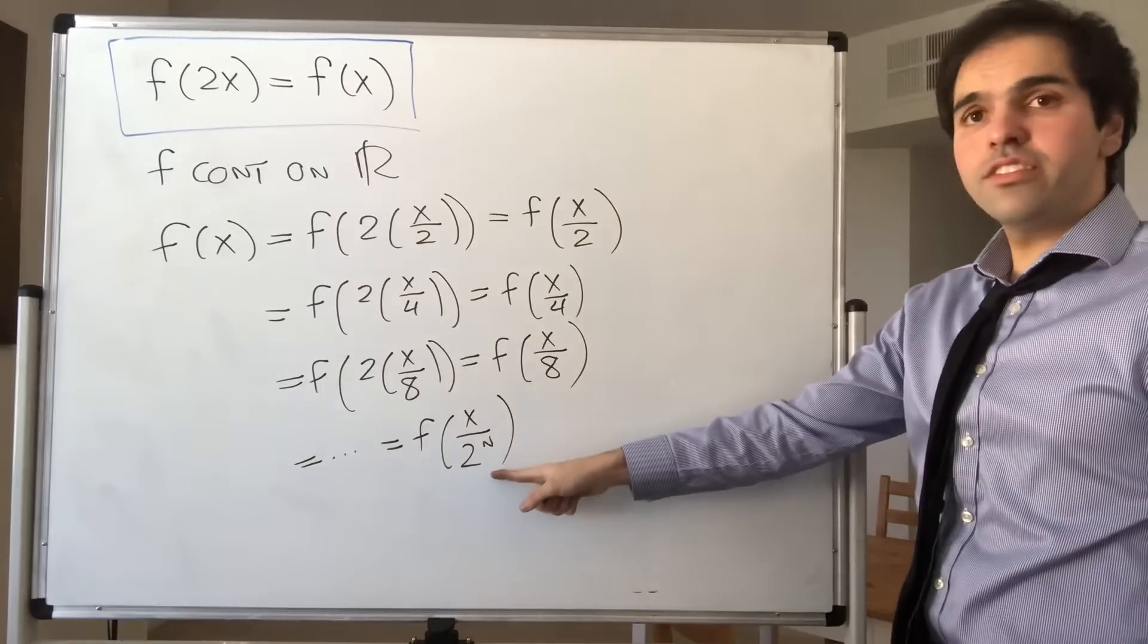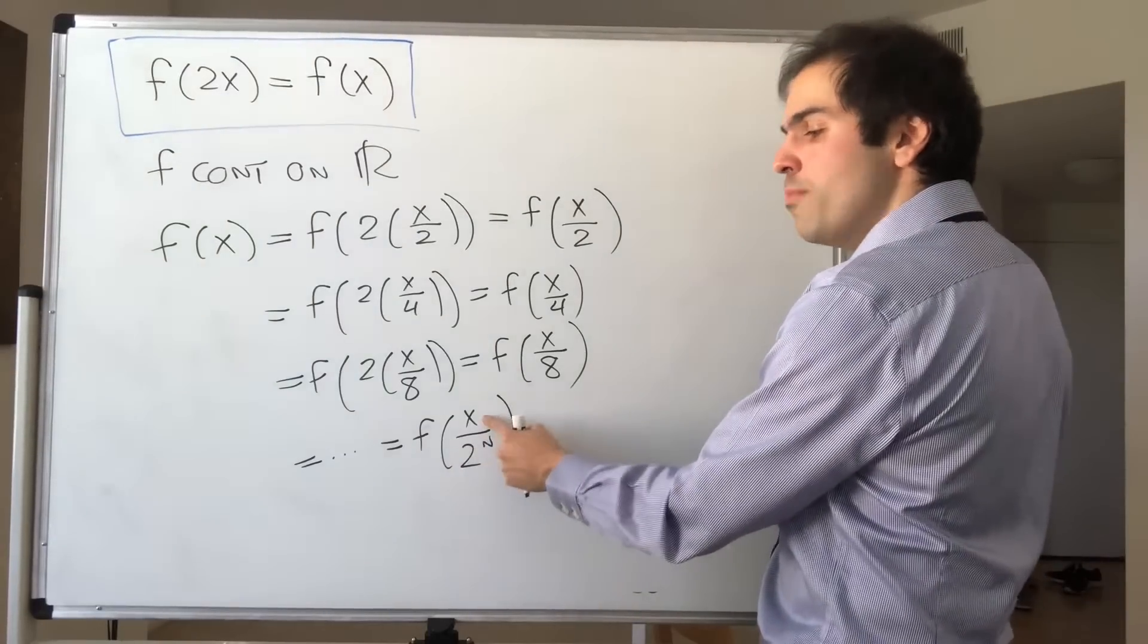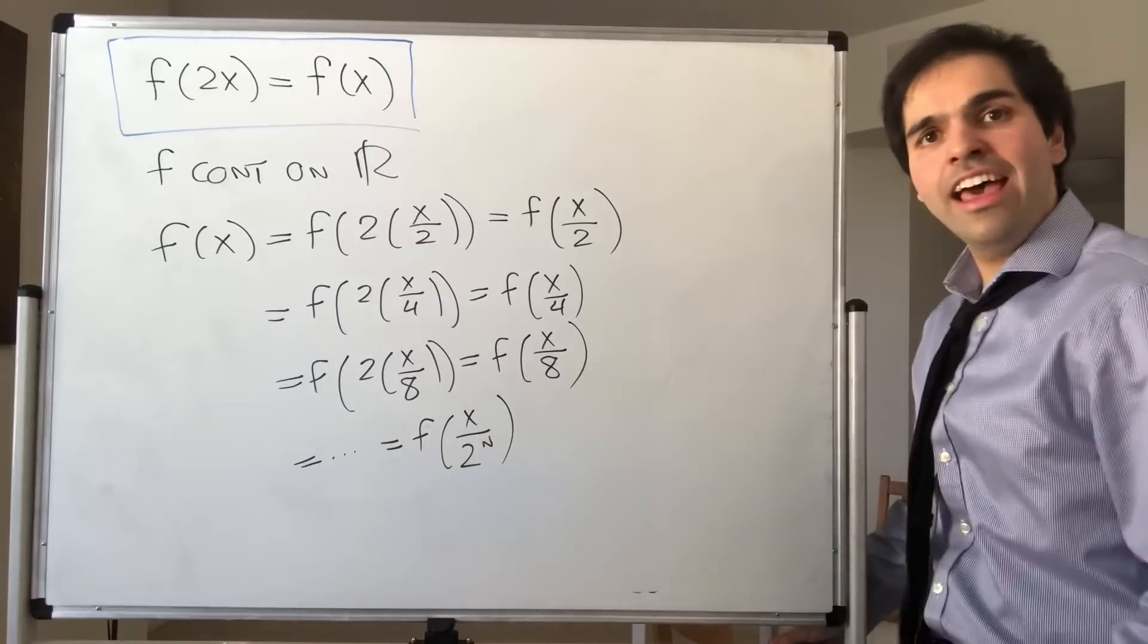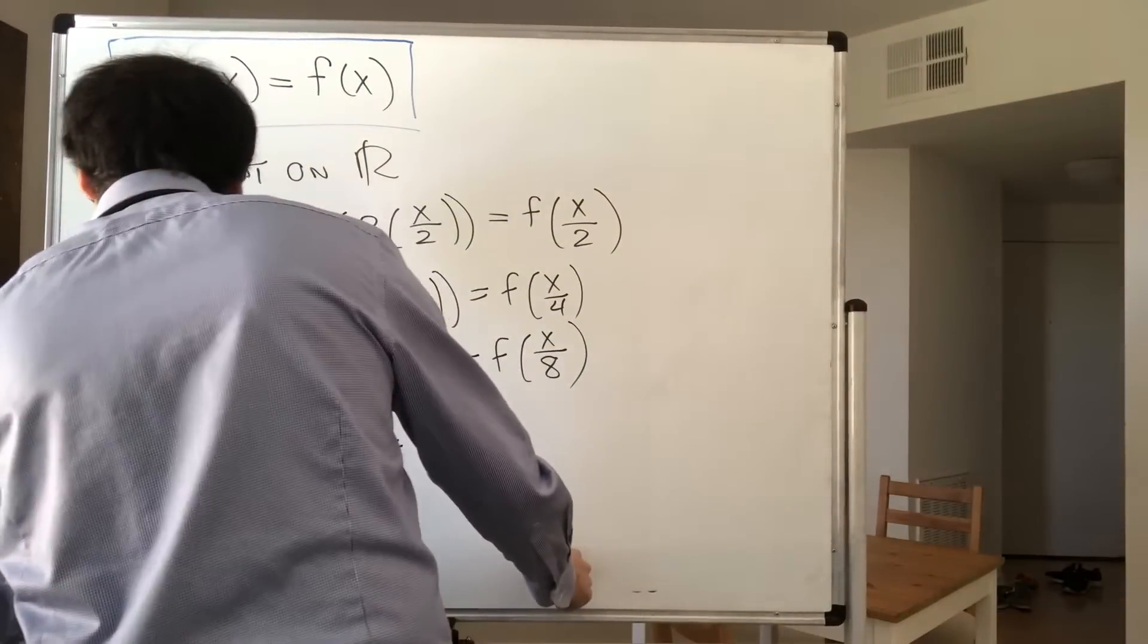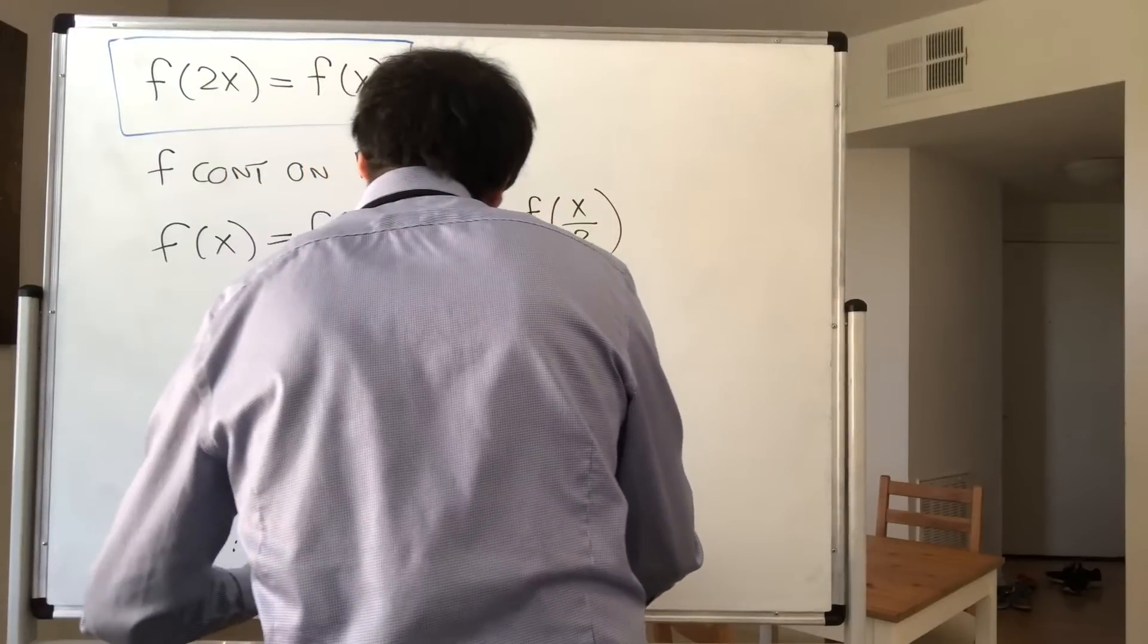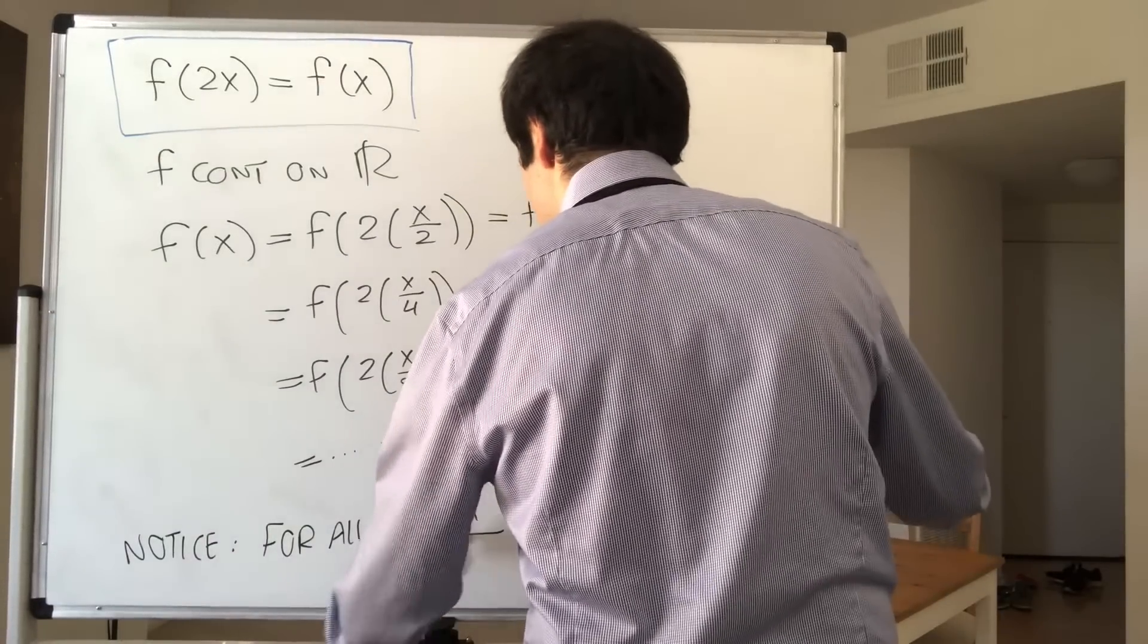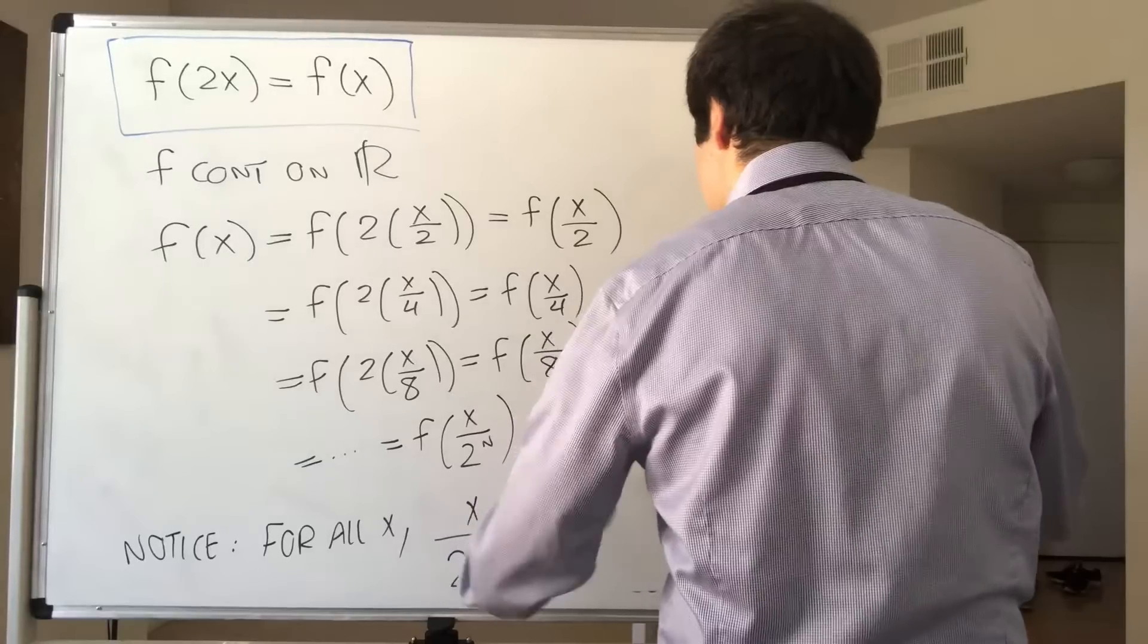But here's the thing. So remember f is continuous. The main observation is no matter which fixed x we have, x over 2 to the n goes to 0. So notice, for all x, x over 2 to the n, as n goes to infinity, goes to 0.